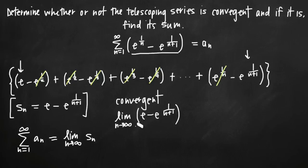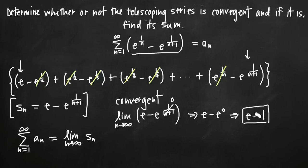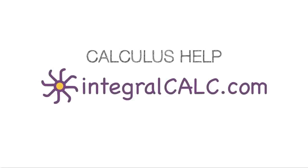When we evaluate this limit by plugging in a very large value for n, the exponent 1 over n plus 1 has a very large number in the denominator, so it tends to 0. That gives us e to the 0 power, which is 1. So the limit becomes e minus e to the 0, or e minus 1. This is the sum of our original series a sub n.